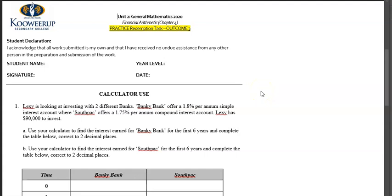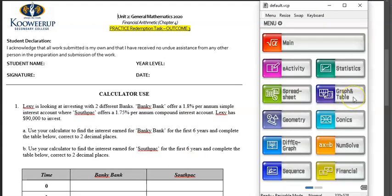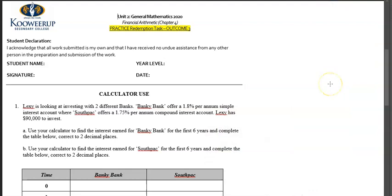This video will be dedicated to the practice redemption task outcome 3 solutions for the financial arithmetic topic for Year 11 General Maths 2020. We need to use the ClassPad calculator in conjunction with this, and the two main features we're using is the graphs and table app and also the financial app. Just be aware that this is an emulator, so the positioning of these buttons found in your calculator might be in a different position.